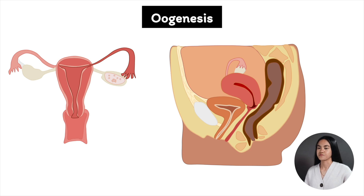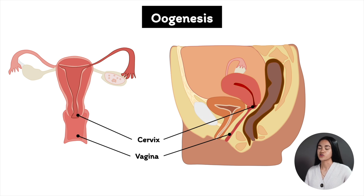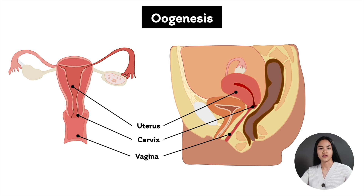Let's begin with a quick review of the female reproductive system. The female reproductive tract is located within the pelvis. The internal female genitalia includes the vagina, a muscular tube that connects the uterus and cervix to the outside of the body, also known as the birth canal. The cervix is the lower portion of the uterus, connecting the vagina with the main body of the uterus. The uterus is a thick-walled muscular organ where the fetus develops during pregnancy.